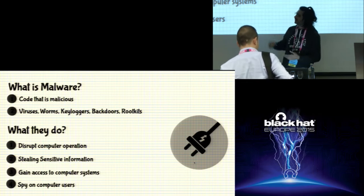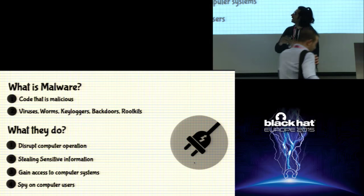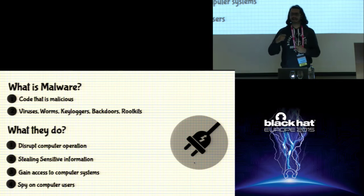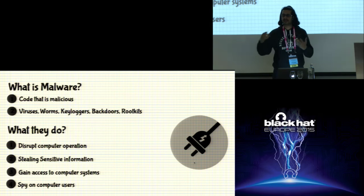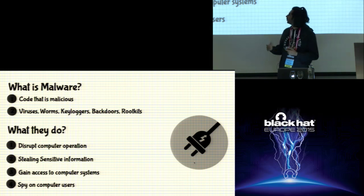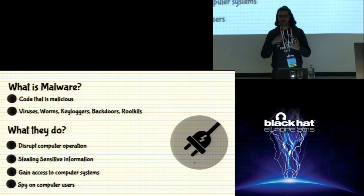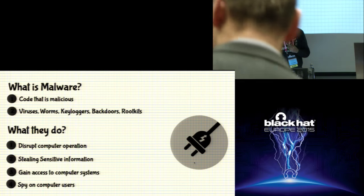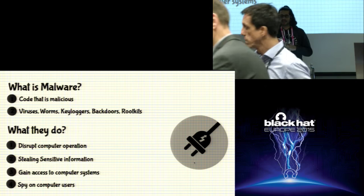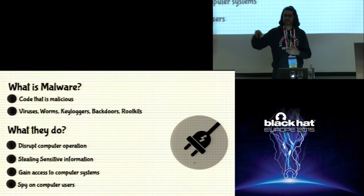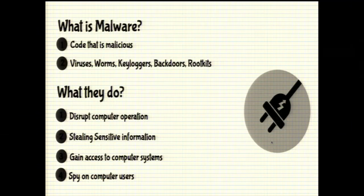What is malware? It's code that is malicious and can get into your system without your consent — via spear phishing email, watering hole attacks, or drive-by downloads. Malware can disrupt your computer operation, steal sensitive information, or allow attackers access to the system. In the case of APT malwares, APT actors use RAT programs — remote access Trojans — which allow attackers to hop into other systems, find data of interest, and exfiltrate it out of the network. It can also spy on systems.